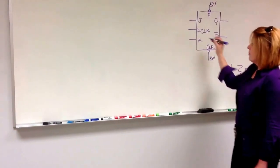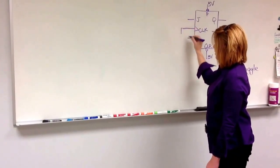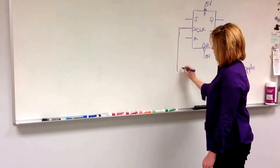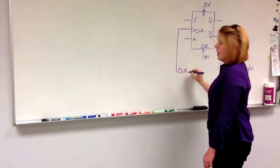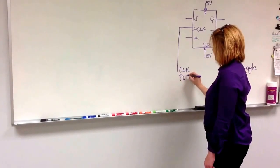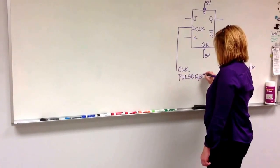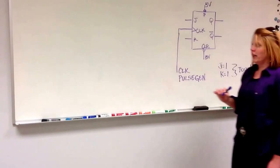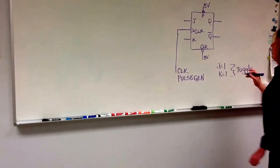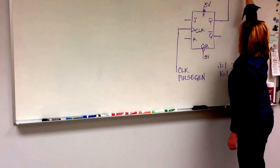I am going to take my clock and run it to an input from my clock on your parallax board, that is also called the pulse generator. And I am going to take Q and run it to one of my LEDs.